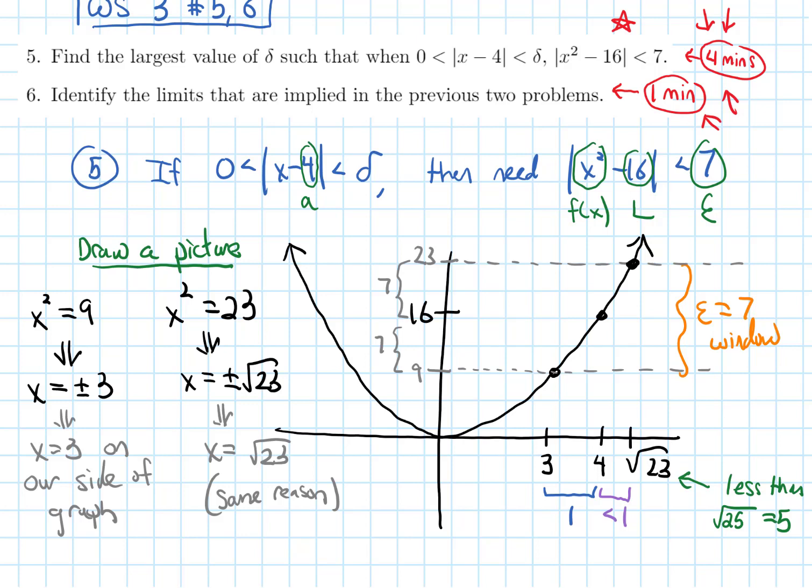So now delta is a distance that I need to be able to travel away from 4 such that when I travel that distance in either direction, either to the left of 4 or to the right of 4, that distance delta, I need that portion of the graph to remain inside of this epsilon window. So if I start to travel a distance away from 4, I will run into this right endpoint first, and that's what I'll let delta be. That distance from 4 to root 23 is root 23 minus 4, and I'll also travel that distance this way, and that restricts us to this part of the graph. Here is the right endpoint, and then here is the left endpoint.